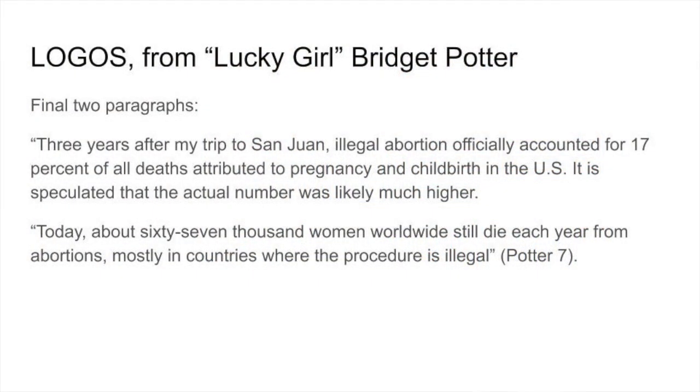Now let's look quickly at some examples of each. For logos, let's look back at the final lines Bridget Potter writes in 'Lucky Girl.' She says: three years after my trip to San Juan, illegal abortion officially accounted for 17 percent of all deaths attributed to pregnancy and childbirth in the U.S., and it is speculated that the actual number was likely much higher. She goes on: today about 67,000 women worldwide still die each year from abortions, mostly in countries where the procedure is illegal. Potter uses statistics and hard facts, allowing us to draw our own conclusions — persuading us that laws banning abortion do not stop abortions but rather cause illegal abortions to grow and women to die needlessly.